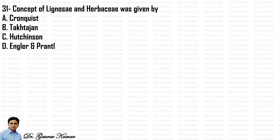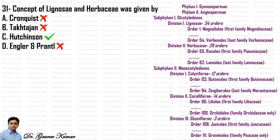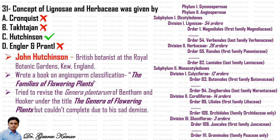The concept of Lignosi and Herbacy was given by Hutchinson. The Hutchinson system of classification divides the sub-phylum Dicotyledon into two divisions: Lignosi and Herbacy. You should remember the first and last order as well as the first and last family of those divisions. John Hutchinson was a British botanist at the Royal Botanical Garden Kew, England. He wrote a book on angiosperm classification: 'The Families of Flowering Plants.'